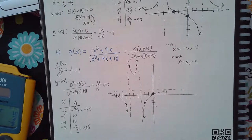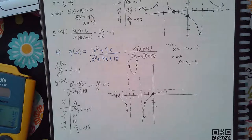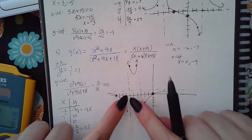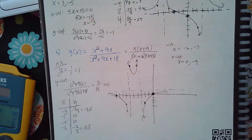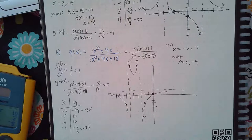All you need is the vertical asymptotes, the horizontal asymptote — or oblique if there's an oblique one — your y-intercept, your x-intercept, and then two points on each side of each vertical asymptote. You'll have everything you need to click the graph button and it'll graph it for you.